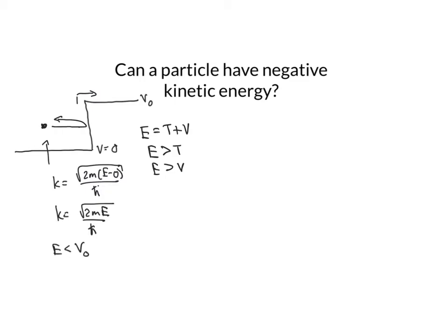If we have this situation here where the particle has an energy that is less than V₀, then we call that a classically forbidden region.